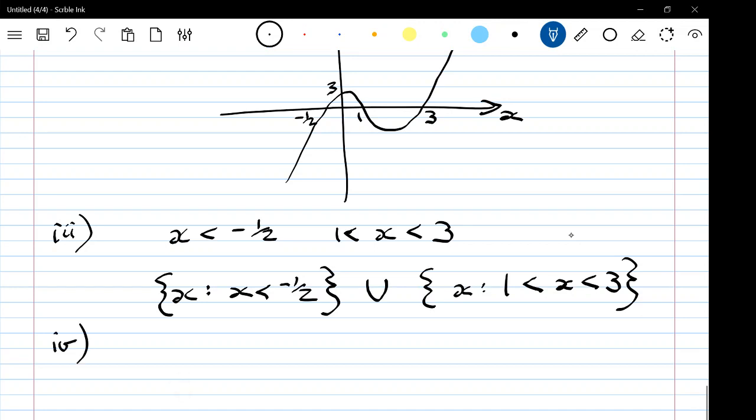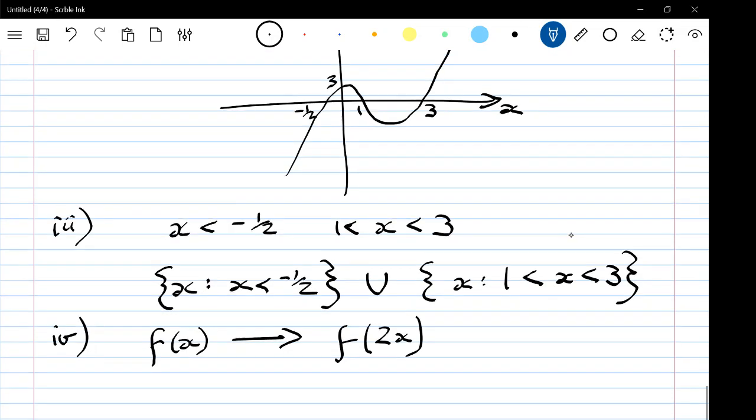Part 4 says the graph is transformed by a stretch parallel to the x-axis, scale factor of half. Now that means, you know, if we were doing this in f of x notation, a stretch, scale factor of half in the x direction would be f of 2x, wouldn't it? So that means I'm going to replace x with 2x.